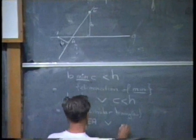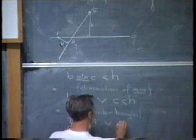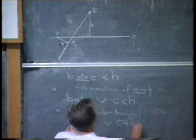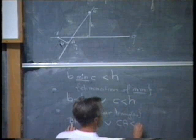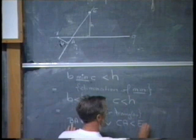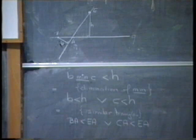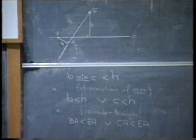According to the rules of the game, the other condition yields me that CA less than EA. Let me check. You check whether I have made an error.